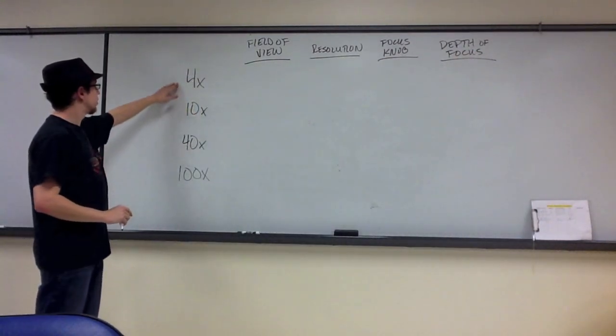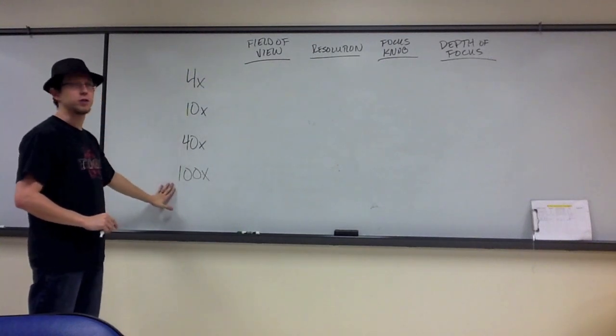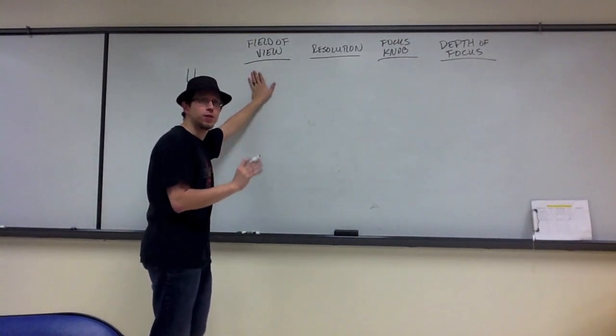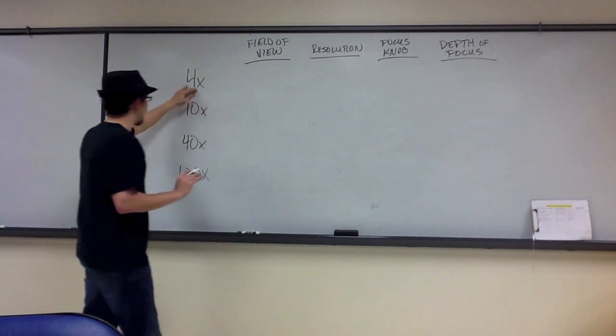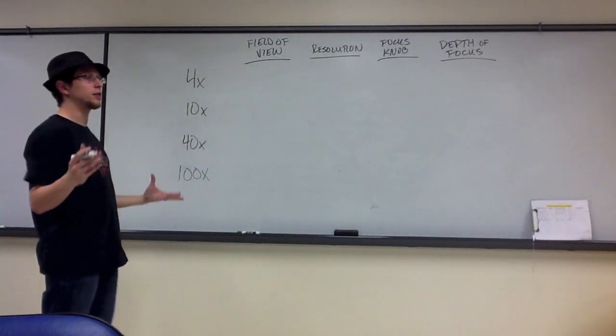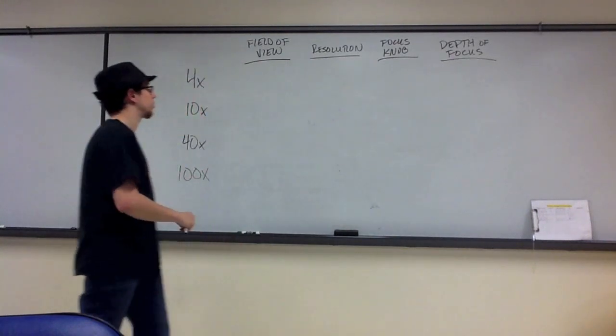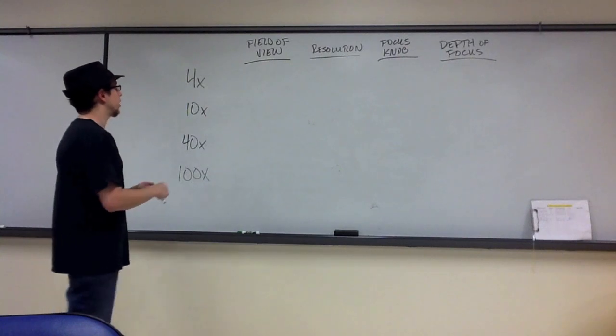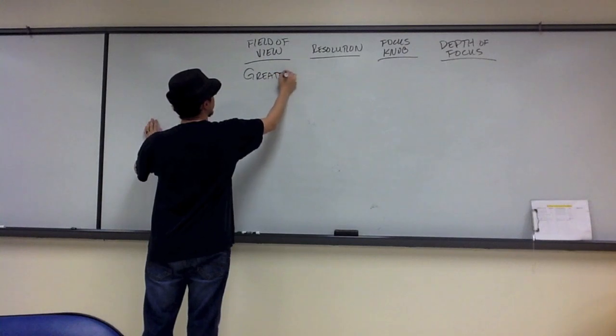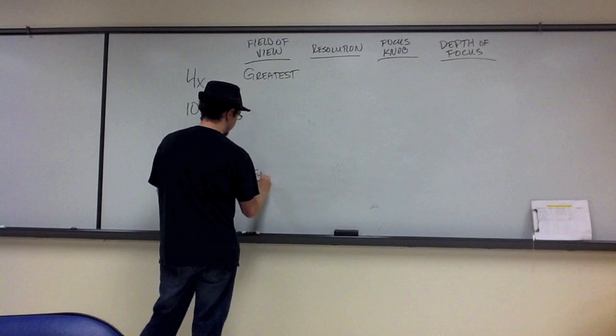As we move from 4x to 100x, we increase magnification. Field of view is how much of the surface area of the slide you can see using each of these objectives. The objective that has the greatest field of view, that lets you see the most of the surface area of the slide, is going to be the 4x objective. While the 100x is going to have the least field of view.